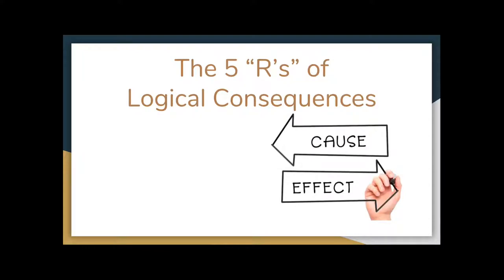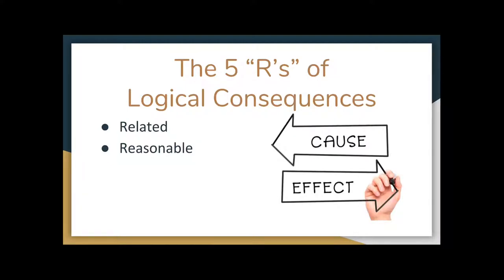Dreikurs identified five R's of logical consequences. First, the consequence must be logically related or connected to the behavior — the more closely related, the more valuable it is to the student. Second, it must be reasonable: a consequence should be equal in proportion and intensity to the misbehavior. You don't make students write lines for a thousand years for one infraction — it's not for students to suffer, but for them to understand the connection between their behavior and the consequence.